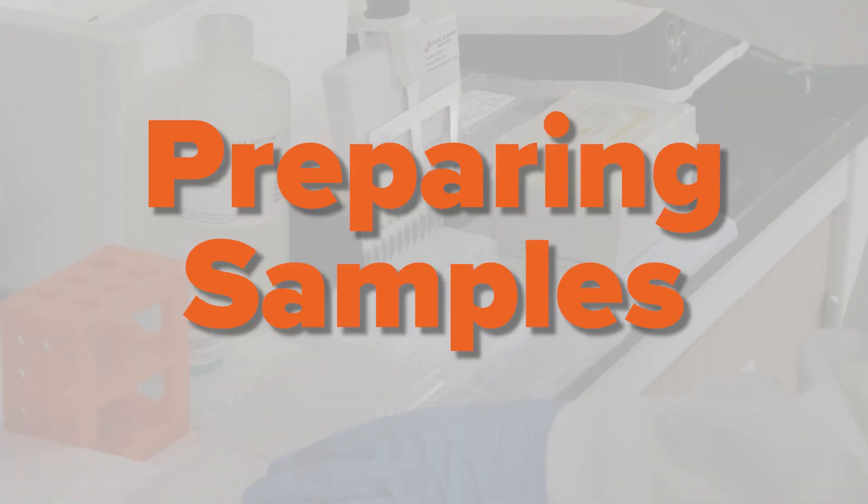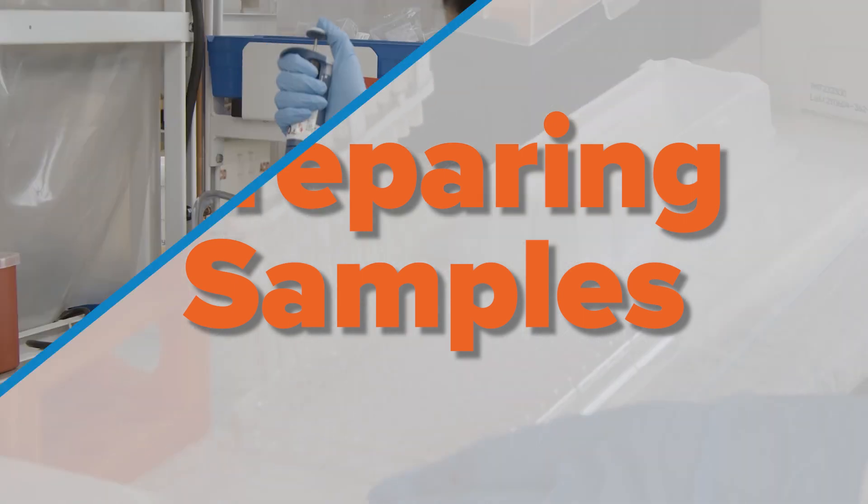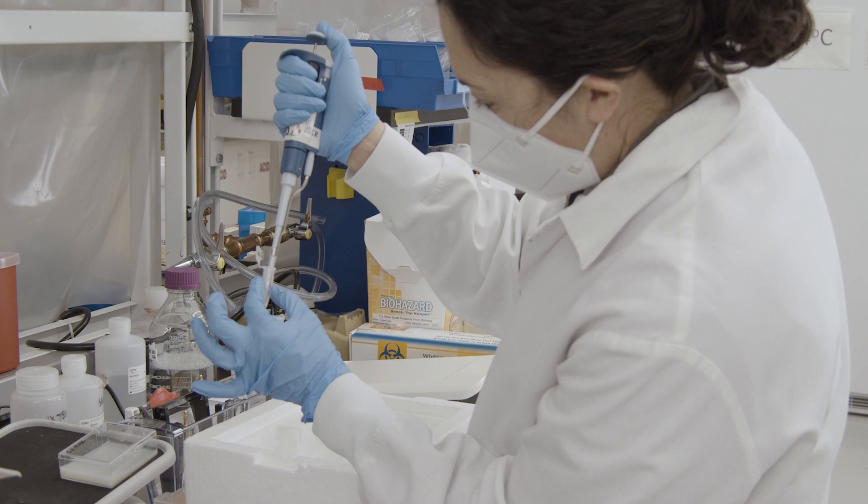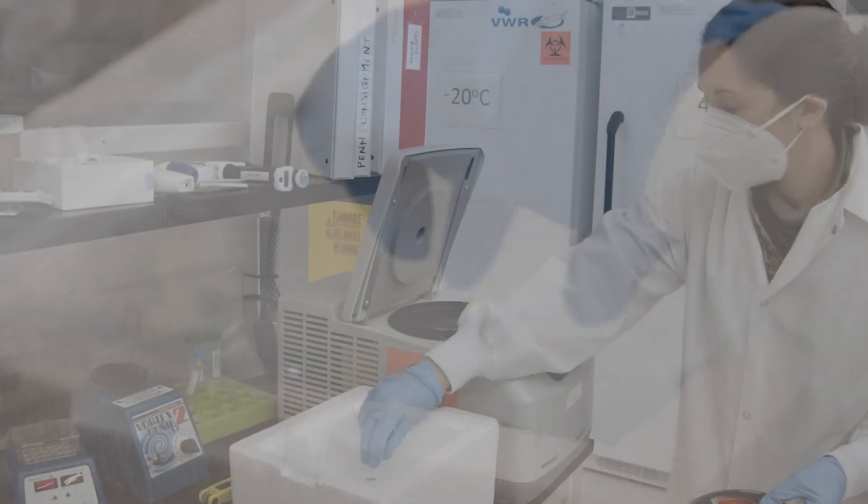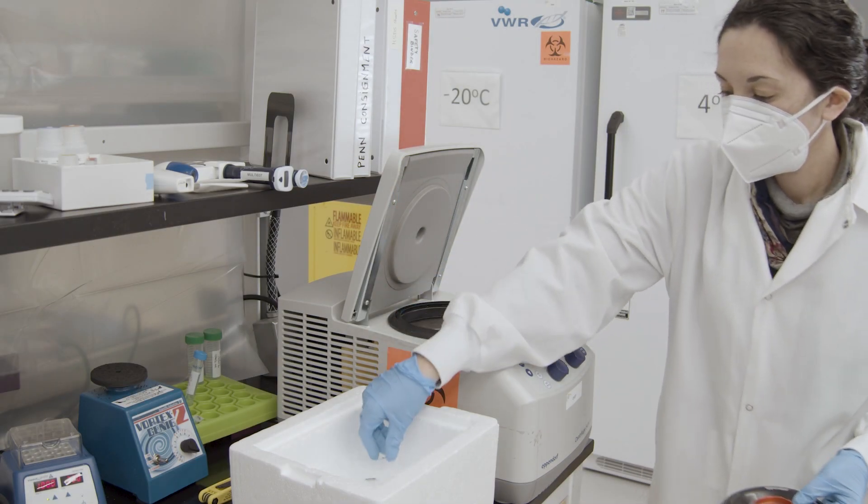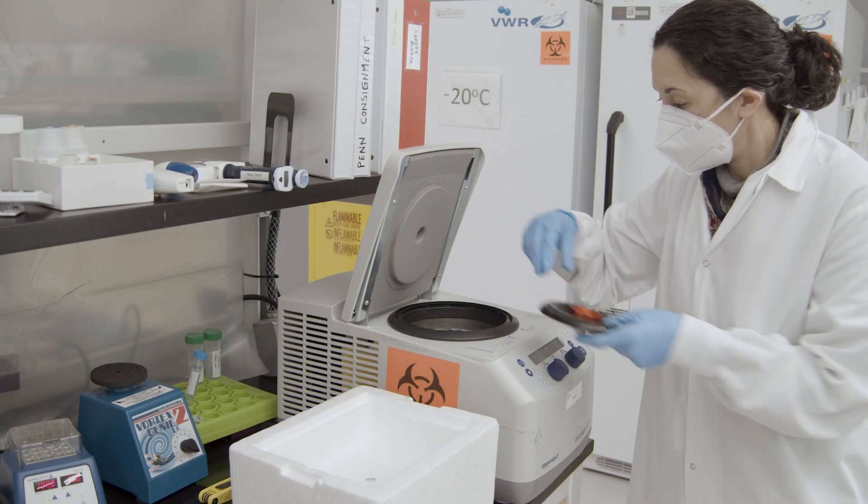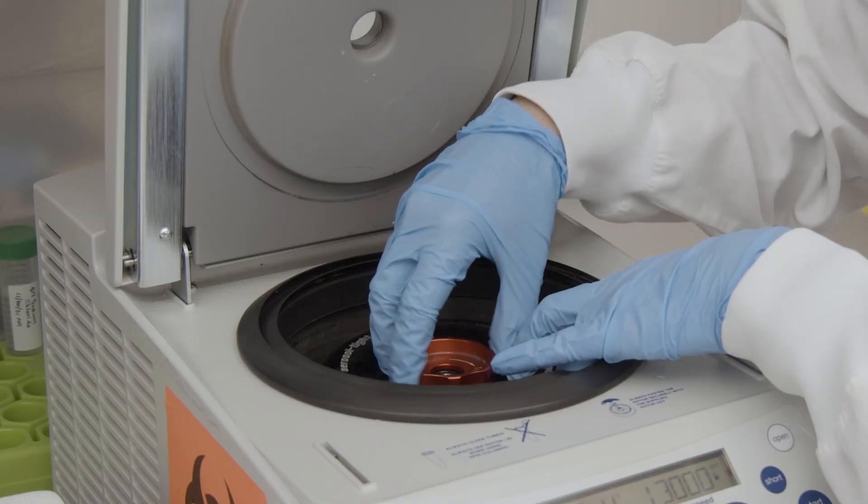We start by preparing our samples. First, we'll lyse cells or tissue samples on ice to release the proteins into solution. This can be done with a number of different reagents, so just pick the one you have on hand or the one you're most comfortable using. Once the lysis step is complete, make sure to clear the lysates by centrifugation to remove any cellular debris from the samples.